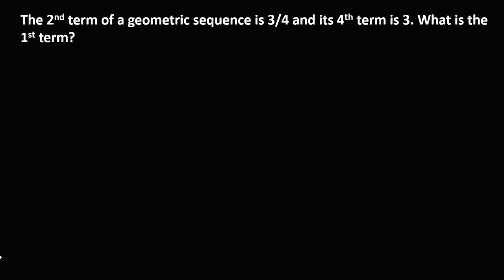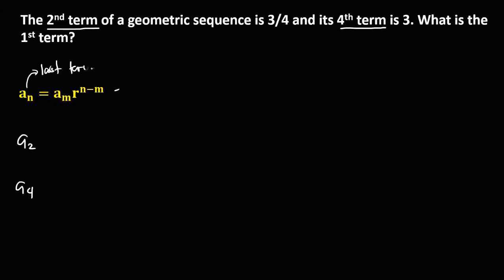First we need to find the common ratio using this formula. From the problem, the given values are: the second term, that's a sub 2, and the fourth term, that's a sub 4. Since from this formula a sub n is the last term, we assume that a sub 4 is the last term, so this one is a sub n, and a sub 2 is a sub m. Since the second term is 3 over 4, a sub m equals 3 over 4, and the fourth term is 3, so a sub n equals 3.